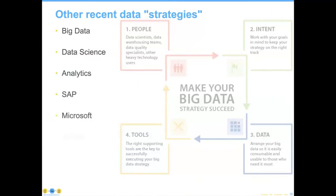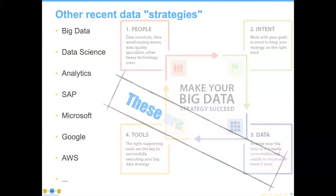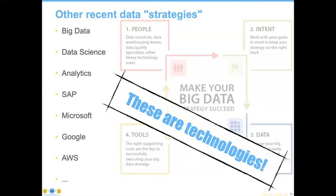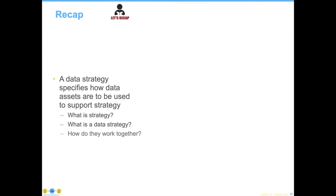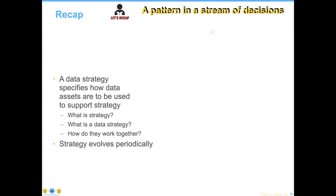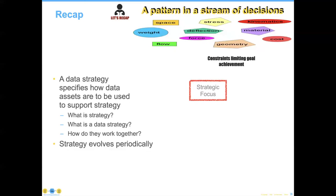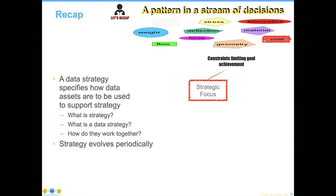Over the years, I've had various technologies proposed as strategies — obviously good technologies, but they are not in and of themselves strategies. So let's just say: a data strategy specifies how data is going to be used. We understand our strategy should be a pattern in a stream of decisions about data that help us achieve a certain aspect, improve a subset of data — they have to work together as complementary. Strategy itself is going to evolve periodically. As if we were playing video games, the strategic focus at first might be on 'space' — work on it and solve that problem — and then shift focus to 'cost' and eliminate that.